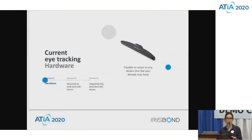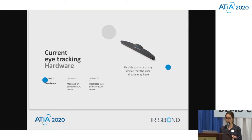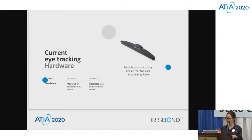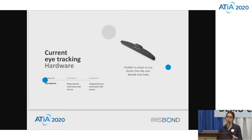I'm going to start talking about our current product, which is the Irisbond Duo. We can offer it as a standalone, mounting on a device. It could be a commercial device, an AAC device, or fully integrated in a solution. The standalone is flexible to adapt to any device that the customer or user may have, so it is easier to start with. But it has disadvantages, as we need to adapt the user to the system and not the other way around.